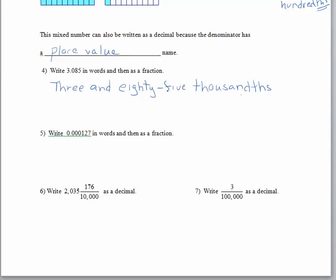Now we can write it as a fraction. Three is the whole number, and we'll add the fraction. We have 85, and our denominator is 1000. Three and eighty-five thousandths.